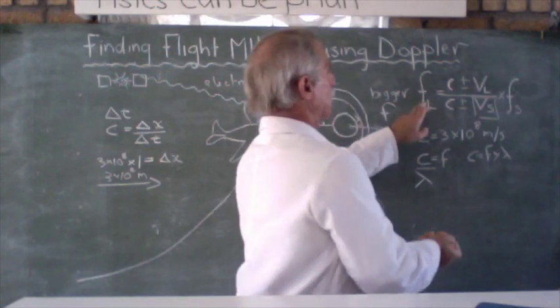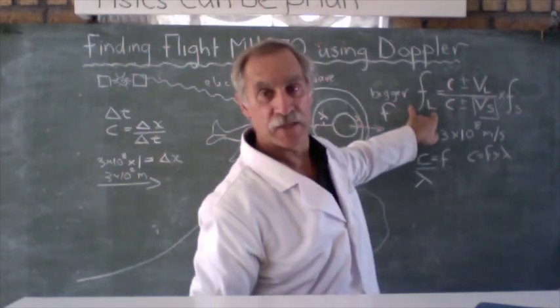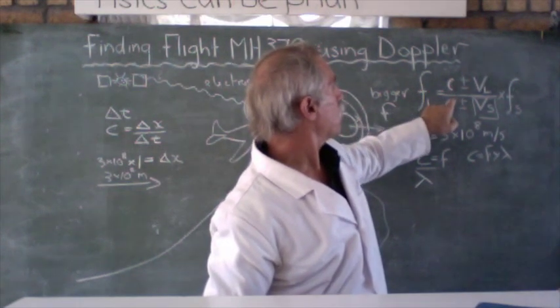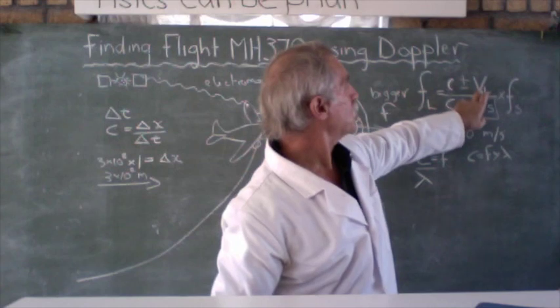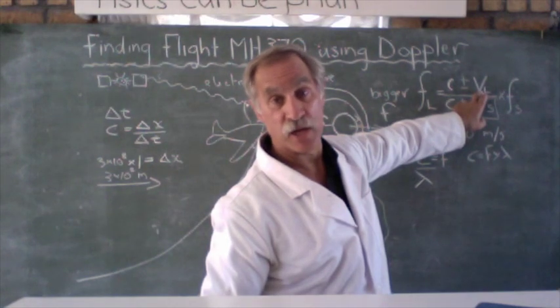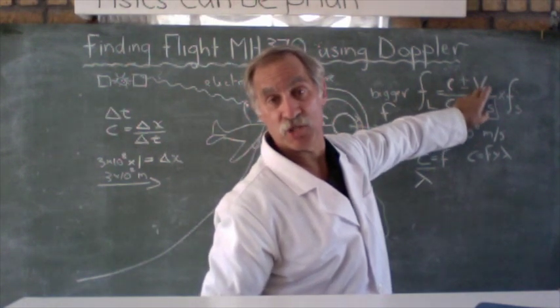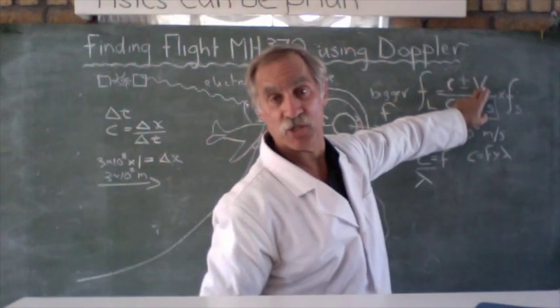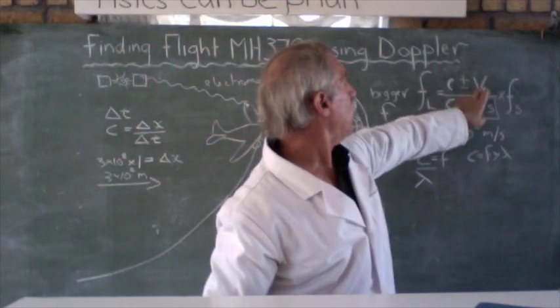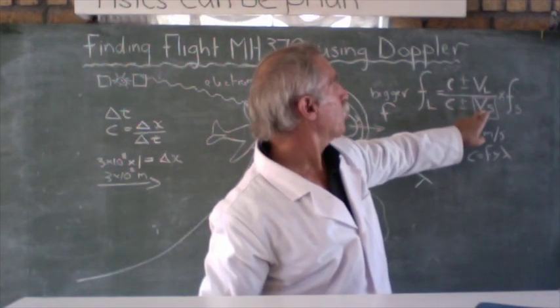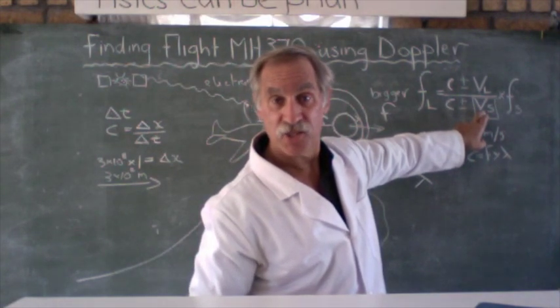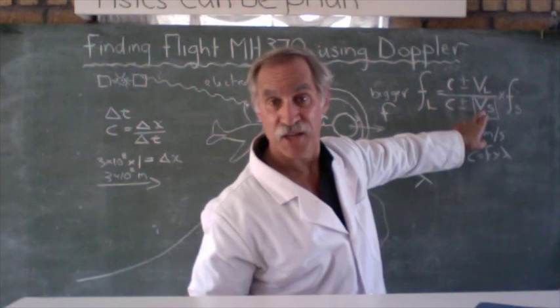That says that the frequency of the listener, which is the satellite, equals the speed of light over the speed of light plus minus the velocity of the listener. Now the velocity of the listener is the velocity of the satellite in space. They know that. And let's suppose it was stationary and it was zero. A geostationary satellite, then maybe that's zero, but I doubt it. But let's say they know C, and now they can work out the velocity of the source of the ping, which is the plane.